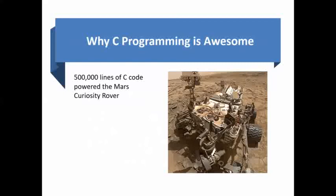Why is C programming awesome? The Curiosity rover was launched on November 26th, 2011 from Cape Canaveral and landed on Mars on August 6th, 2012. Curiosity is a car-sized rover designed to explore the dry surface of Mars. Around 500,000 lines of C code were written to control it, because to communicate directly with hardware devices we use C language. That's why C programming is awesome.